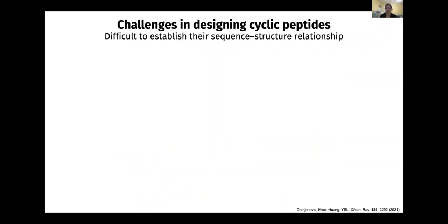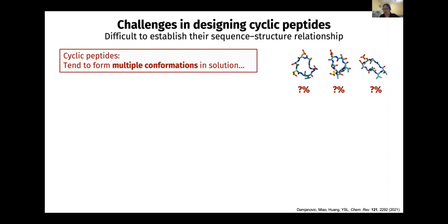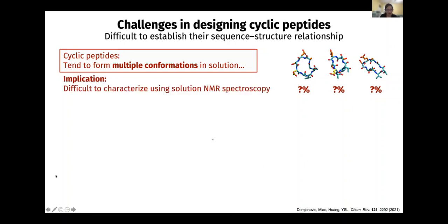Why is it very difficult for us to rationally design cyclic peptides? One reason is that it is very difficult to understand how sequence controls cyclic peptide structure. Unlike larger peptides, cyclic peptides typically are small — ranging from five to about 15 residues — so they don't usually form alpha helices or beta sheets. In solution, they tend to adopt multiple conformations, meaning they don't have one dominant conformation. Even if I'm willing to do solution NMR spectroscopy, what I'm going to see is a mess — I don't know what the structures look like by experiment.